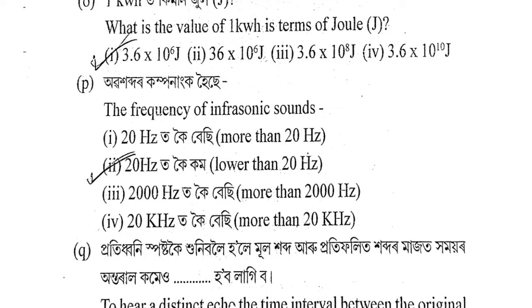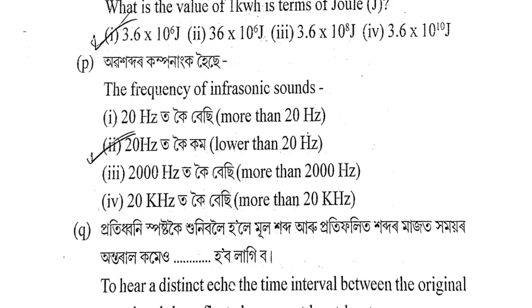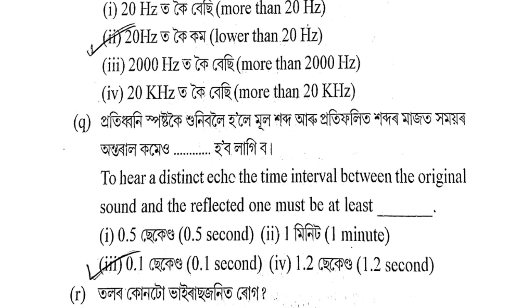Next question: Abohabdor component ko hoi se? The frequency of infrasonic sound is: greater than 20 Hz; less than 20 Hz; greater than 2000 Hz; or greater than 20 kHz? The correct answer is option 2 — less than 20 Hz.